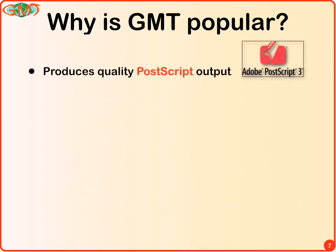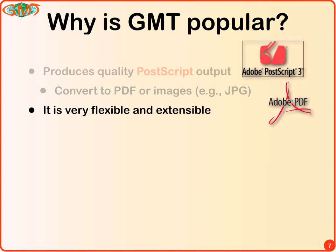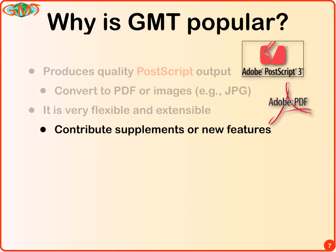We always aim to produce very beautiful PostScript output, though that's usually no longer the end station — we convert it to PDFs, which greatly reduces file size while remaining a vector format, or to raster images like JPEGs, TIFFs, or PNGs for web pages or talks. GMT is very flexible and extensible: if you have a particular problem, you can model your code on GMT, borrow pieces, and write new code specific to your discipline. That's how some of the GMT supplements have arisen. You can share these with us, and we might incorporate them into our supplemental package so many people benefit.